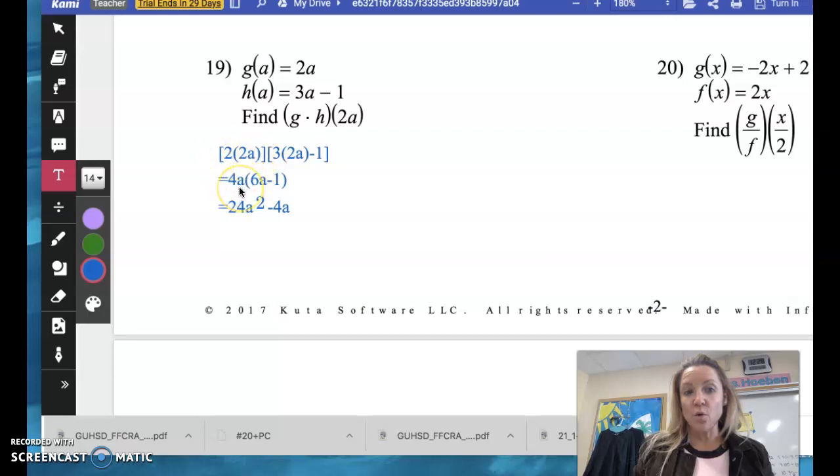so 2 times 2a is 4a, and then within the brackets here, 3 times 2a is 6a, so I have 6a minus the 1